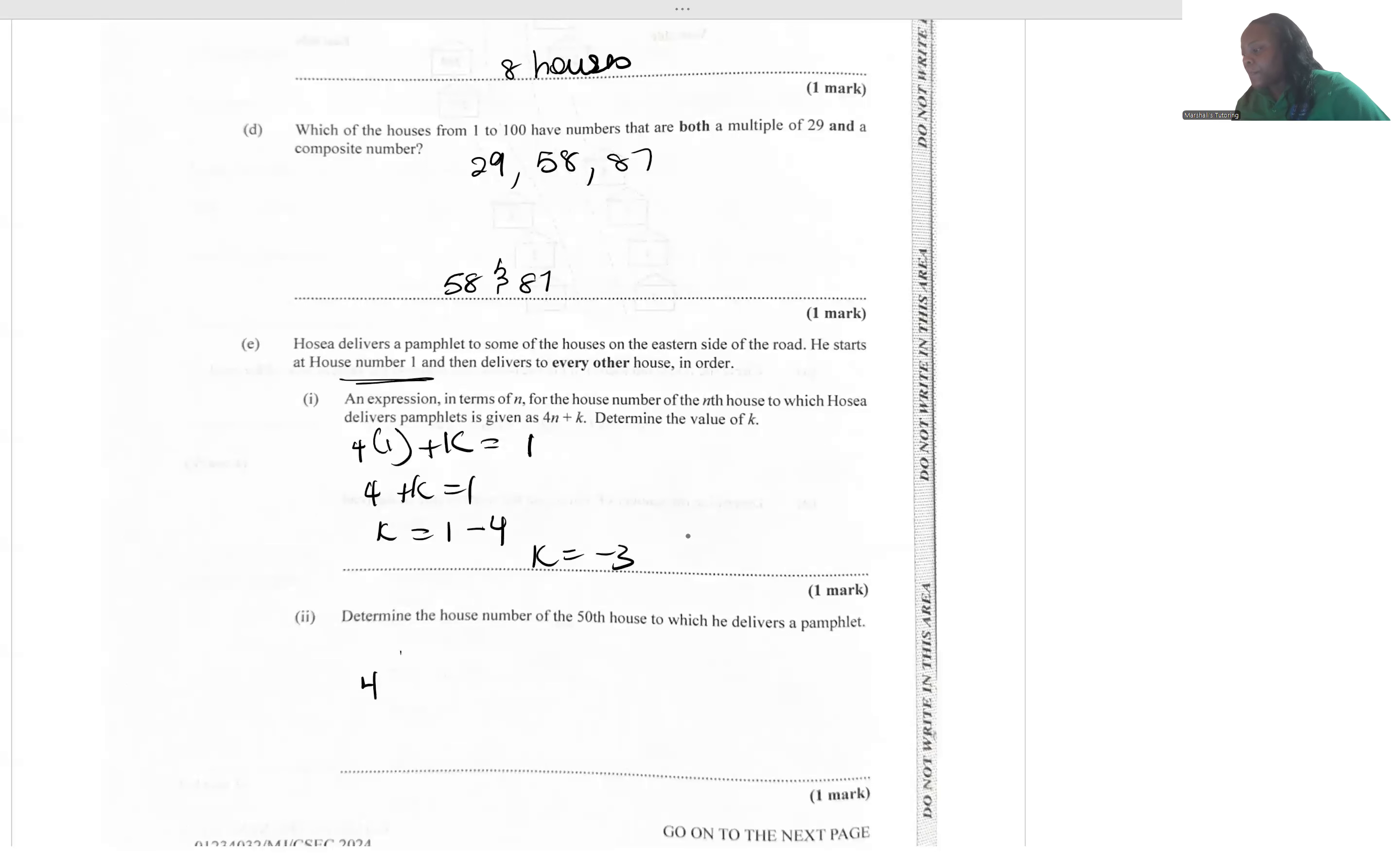So we have 4 multiplied by 50 because 50th house. We know k, in this case it's minus 3, is equal to, and we basically calculate that. 50 by 4, 5 fours are 20, so that's 200 minus 3, which is going to give us 197. So the house number would be 197.